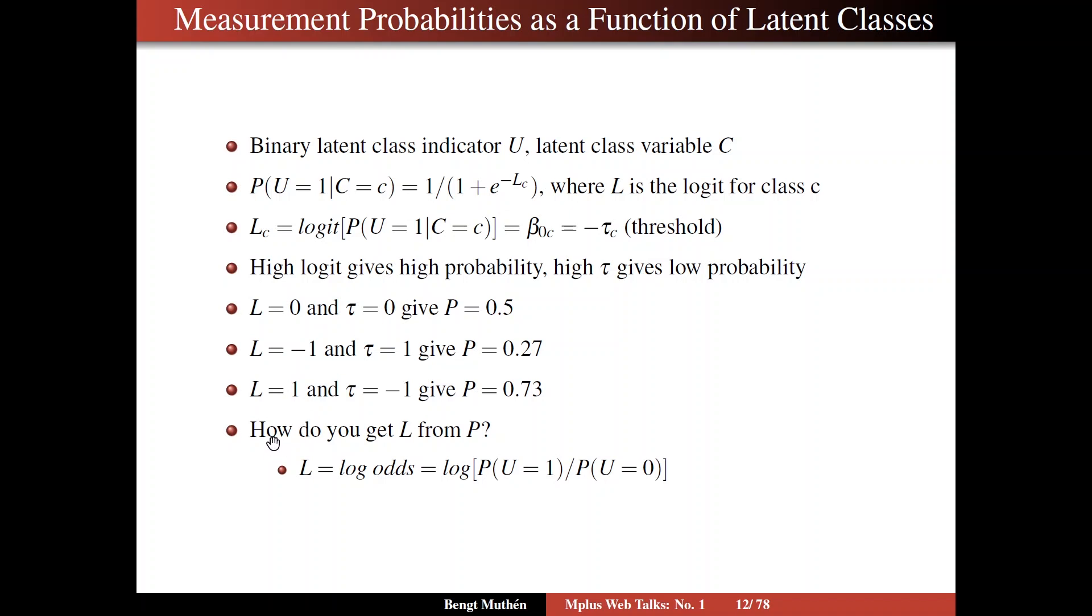So up here we talked about how to get probability of u equals 1 as a function of the logit. And then we just remind ourselves, how do you get the logit from the probability, the reverse? Well, again, the logit is log odds. It's the log of the probability ratio. So if you have a probability that you want, you can calculate the logit, the log of that ratio, and that is your logit. So you can go back and forth in that fashion.